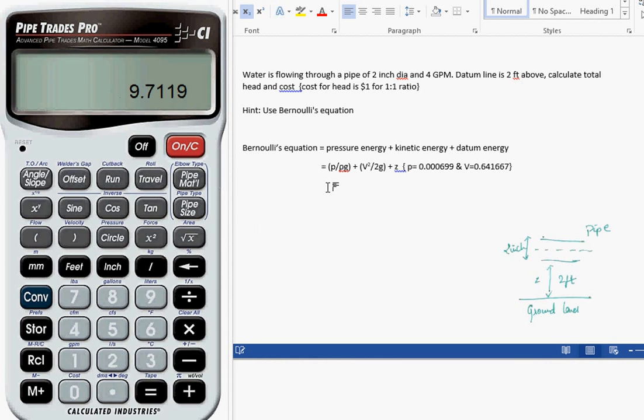So 9.719 plus, secondly, we can calculate the kinetic energy. We know that velocity is 0.641667 calculated. So this gives the kinetic energy.